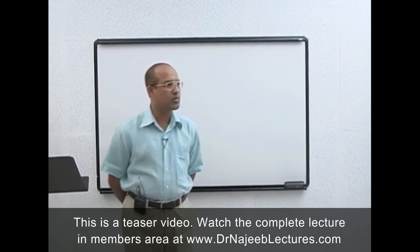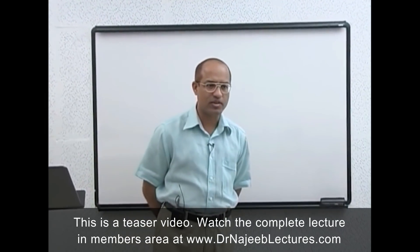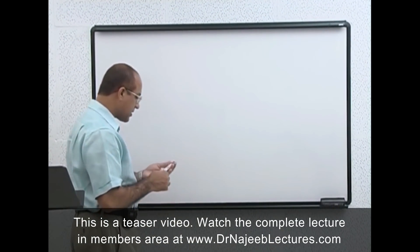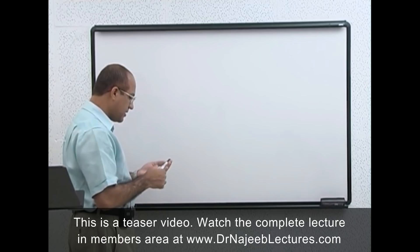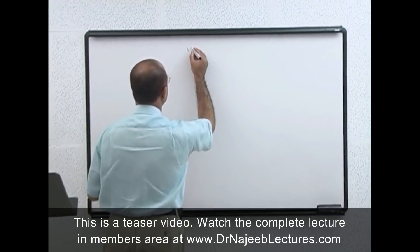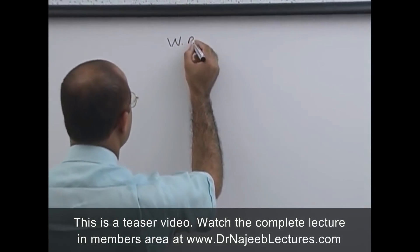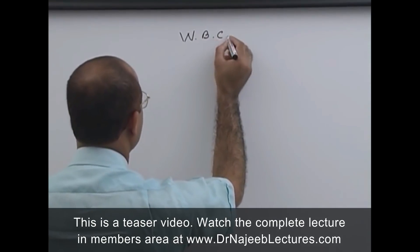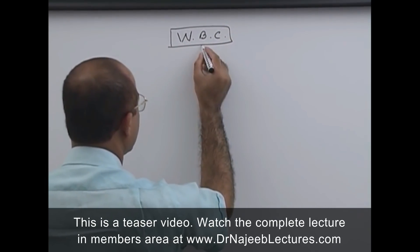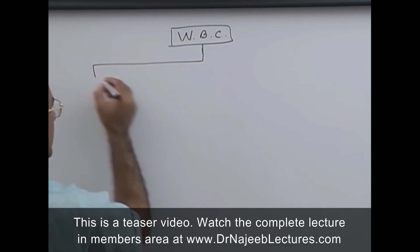Today we are going to talk about white blood cells — leukocytes — which are present in the blood. They are basically divided into five categories, but primarily they are divided into two categories.